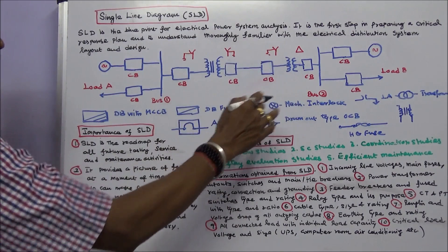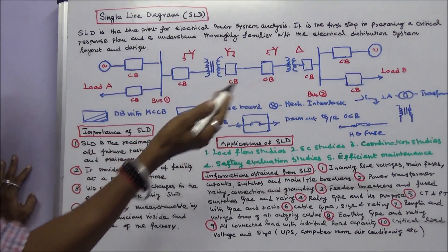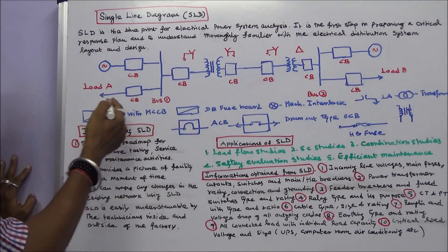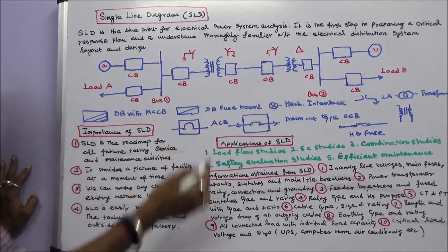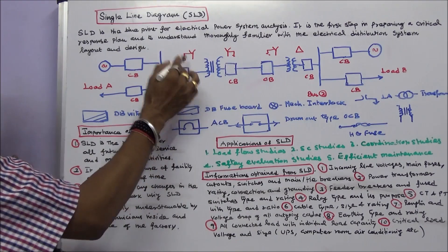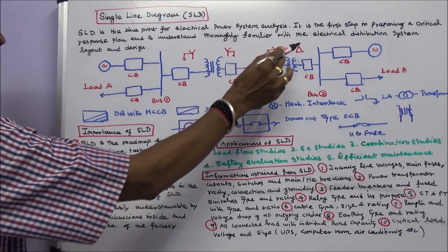This is a typical single line diagram. It consists of two synchronous machines, two loads (Load A and Load B), and two transformers (T1 and T2) with their connections. The connections are star-connected with earth and delta.